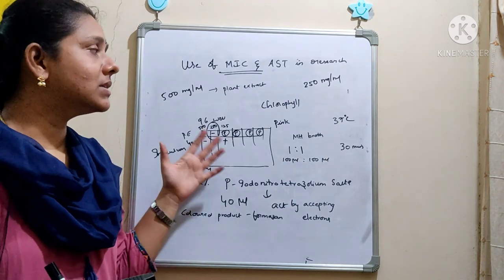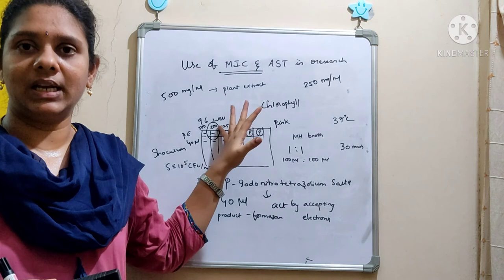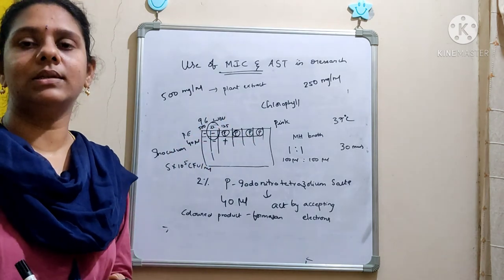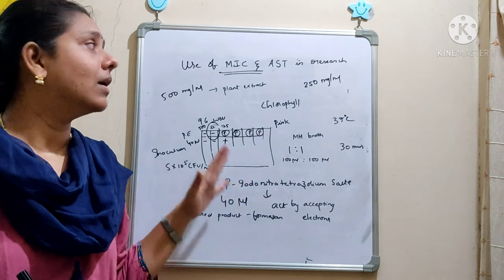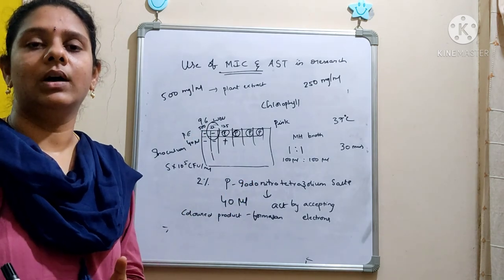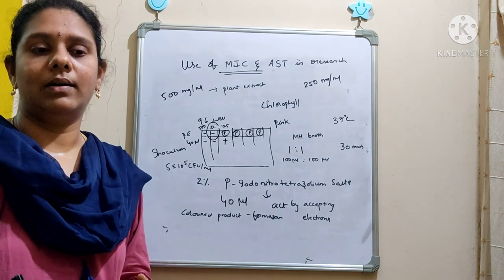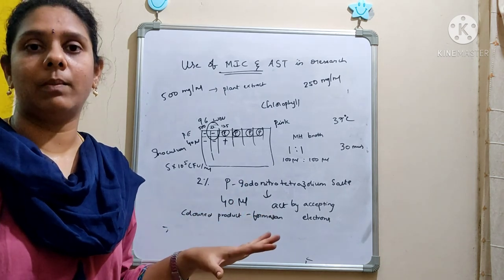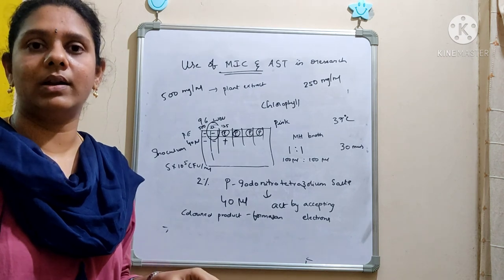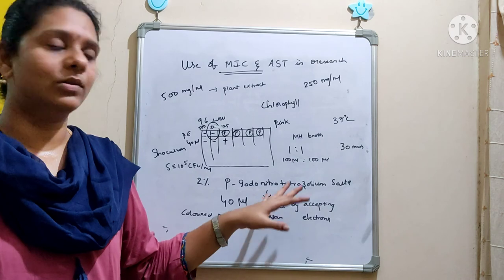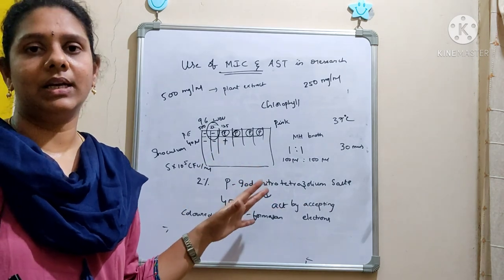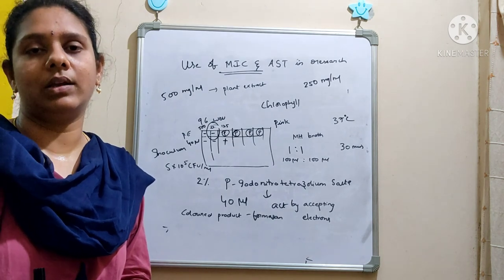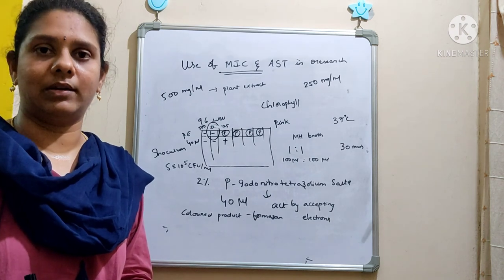Hope you understand this session. This is how we apply these techniques as part of preclinical studies. If you find difficulty in performing AST due to the diffusion problem, you can go with MIC — it is the most accurate and reliable method and you will get good results when performing MIC in the process of identifying a novel drug. Nowadays the emergence of multi-drug resistant strains is a serious problem, and there is a need to identify novel drugs to combat infectious diseases. You can apply these techniques as a preclinical study and further evaluate the efficacy of the drug with additional tests. Thank you.